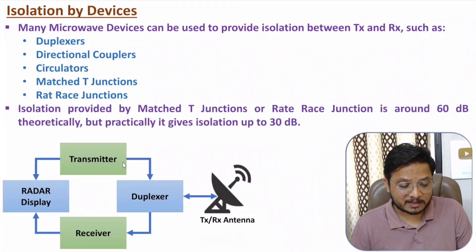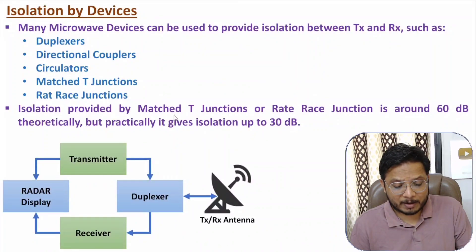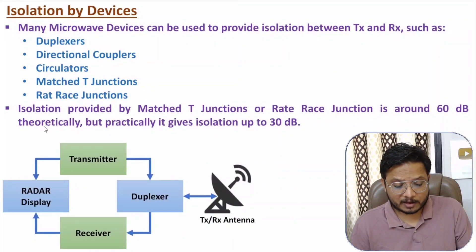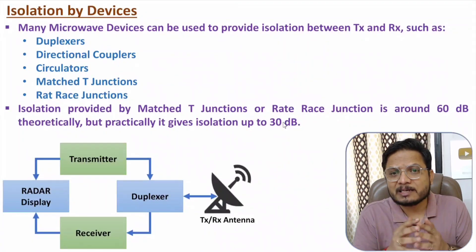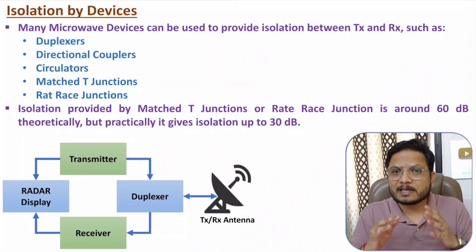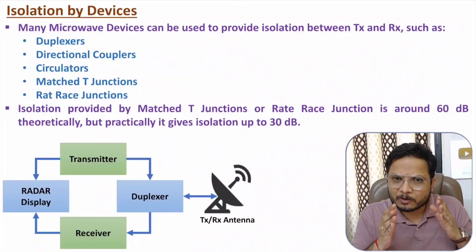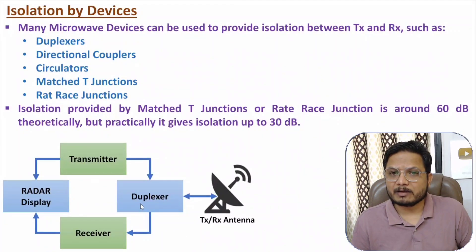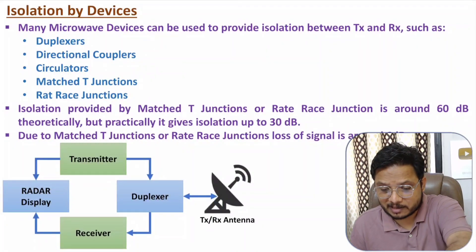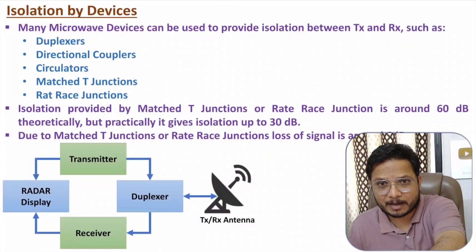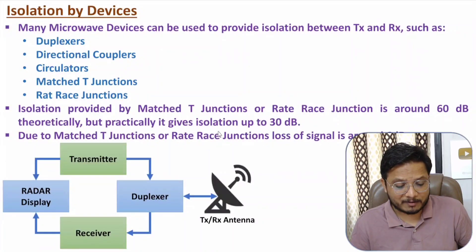There are a few issues when using these devices. The isolation provided by matched T junction and ray trace junction is around 60 dB theoretically. But practically, that isolation is only up to 30 dB. So if you use a matched T junction or ray trace junction instead of a duplexer, you will have 60 dB isolation theoretically, but practically around 30 dB. Additionally, using these two devices causes a loss of signal at both the transmitter and receiver — that loss is around 6 dB.